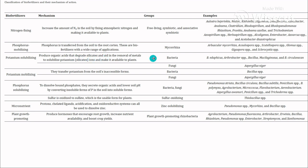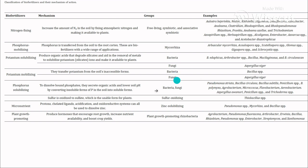Potassium-solubilizing biofertilizer produces organic acids that degrade silicates and aid in the removal of metals to solubilize potassium ions, making them available to plants. This is carried out by bacteria such as Arthrobacter and Bacillus species. Potassium-mobilizing biofertilizer transfers potassium from its inaccessible form in the soil to an accessible form for plants. This is carried out by bacteria and fungi, for example Bacillus species and Aspergillus niger.